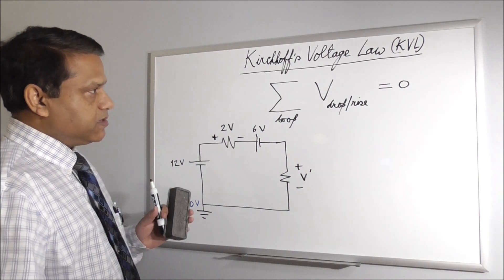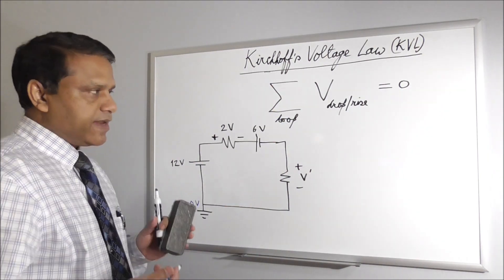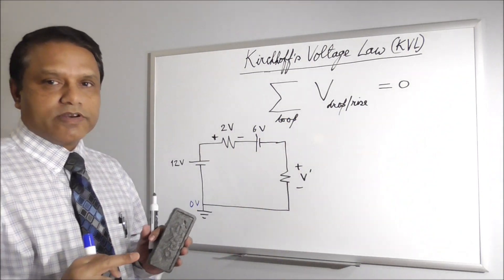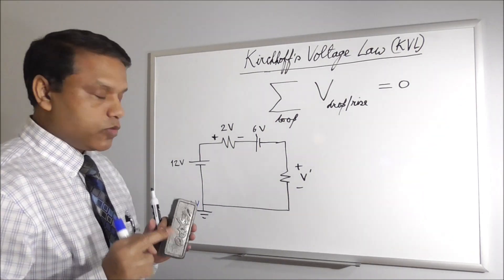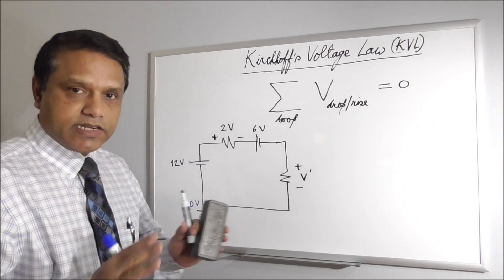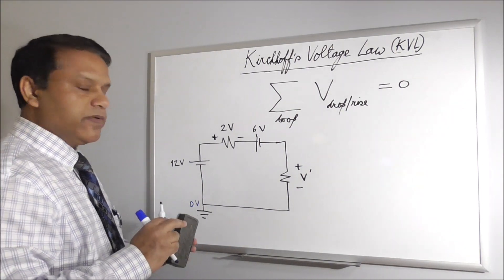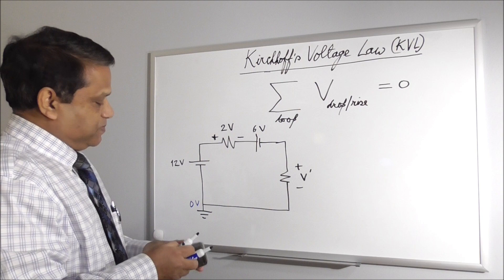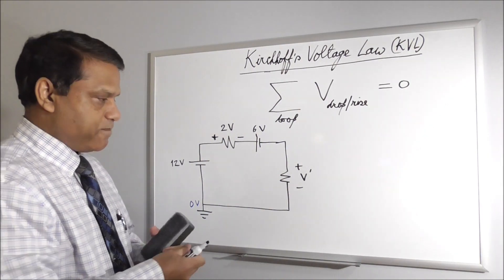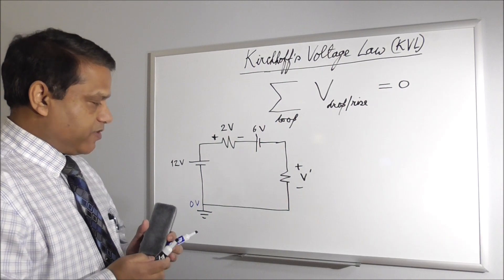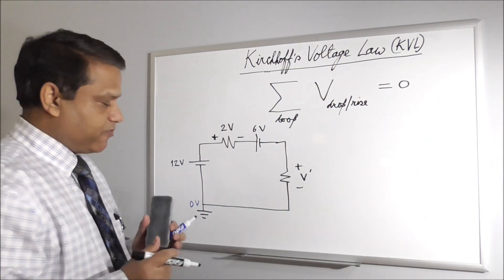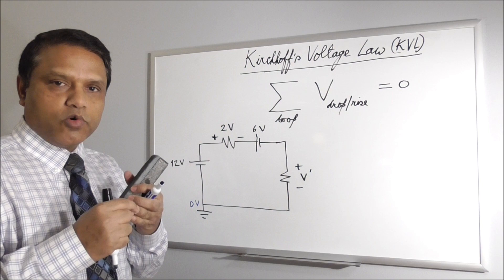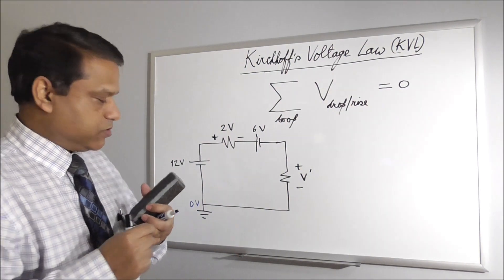Let's try to solve this circuit using Kirchhoff's Voltage Law or KVL. In writing KVL, you have to consider only voltage drops or rises — nothing else. You do not write any node voltage. For example, you have 0 volt here — that doesn't come into the equation. In the equation you only write voltage drops and rises. You have to start at a node. This is a node, this is a node, this is a node — all the points where two or more elements are connected we call a node.